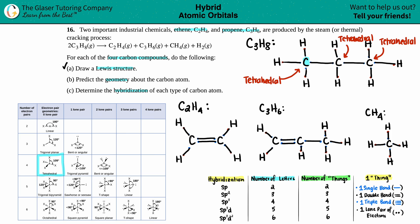For C₂H₄, the two carbons are different from C₃H₈ but identical to each other. Each carbon has only three atoms bound to it with no lone pairs. Scanning the geometry table for three surrounding atoms and no lone pairs gives us trigonal planar. So both carbons in C₂H₄ are trigonal planar.